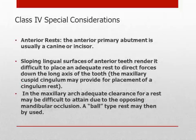The anterior primary abutment is usually a canine or incisor. The sloping lingual surfaces of anterior teeth render it difficult to place an adequate rest to direct forces to the long axis of the tooth. The maxillary cuspid cingulum, however, may provide for placement of a cingulum rest. In the maxillary arch, adequate clearance for a rest may be difficult to attain due to the opposing mandibular occlusion, and a ball-type rest may then be used.